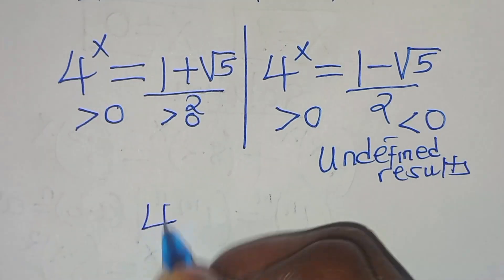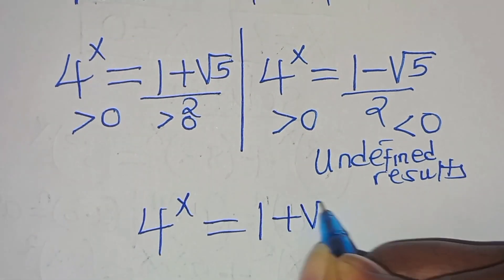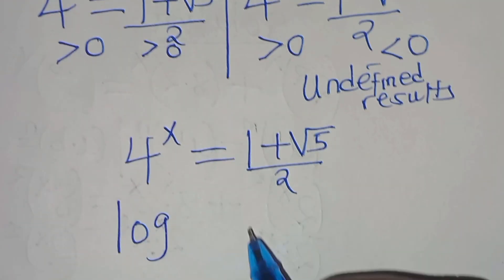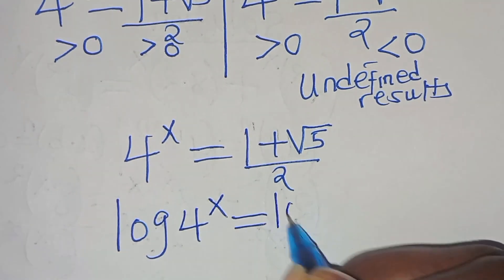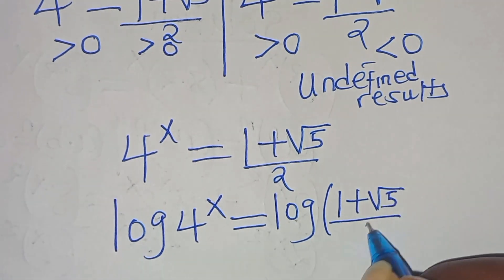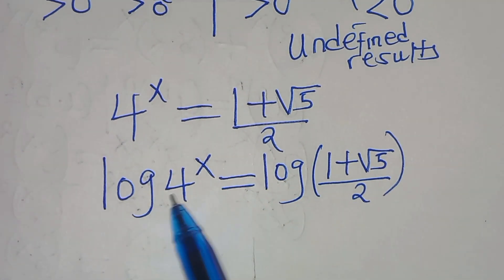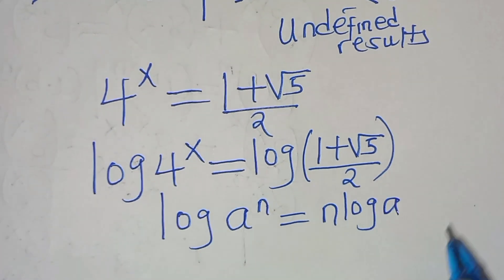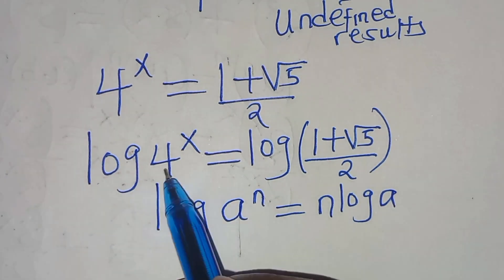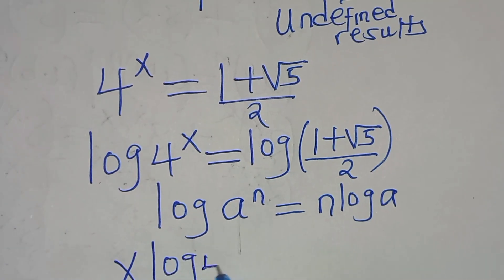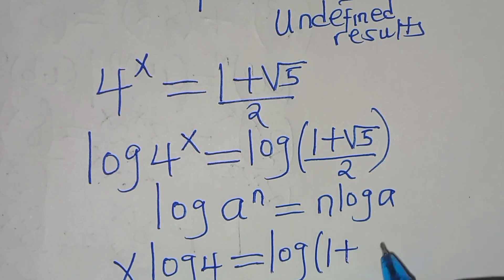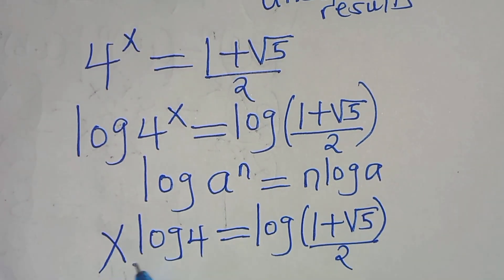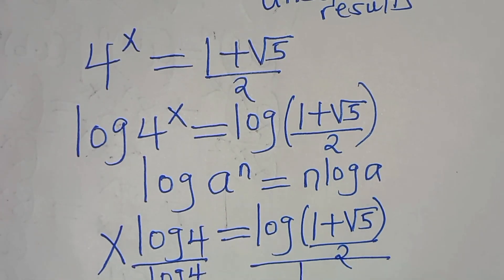We proceed with 4 to the power of x equals (1 plus square root of 5) divided by 2. To solve for x, we take the logarithm of both sides: log of 4 to the power of x equals log of (1 plus square root of 5) divided by 2. Using the logarithm power rule, log(4^x) becomes x times log 4, which equals log of (1 plus square root of 5) over 2.